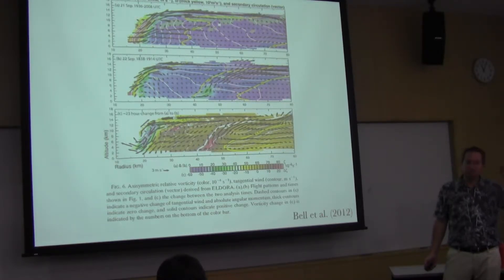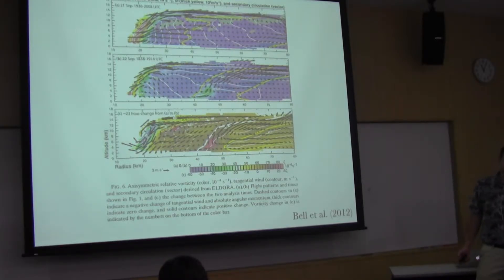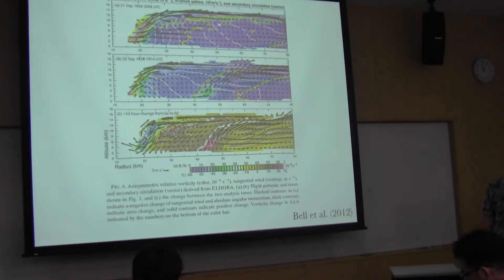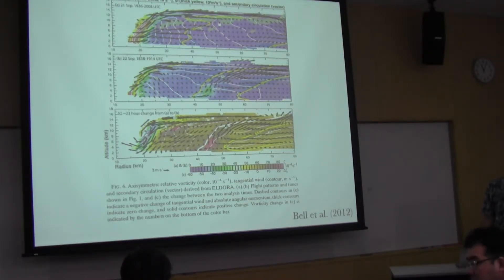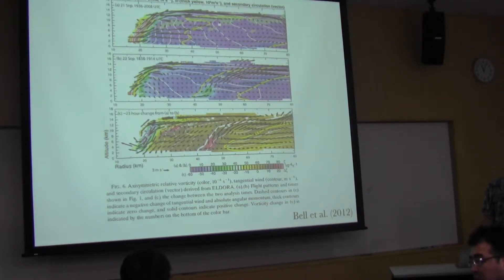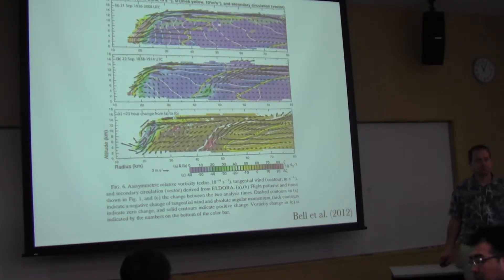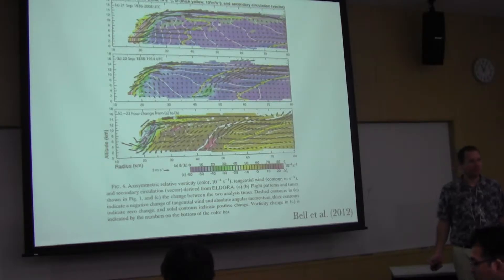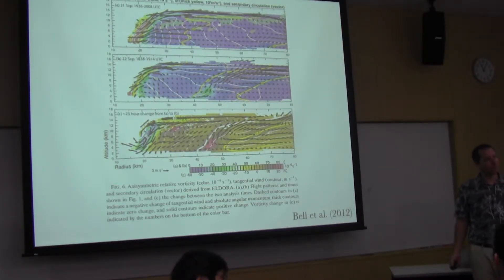Supergradient wind conveys a very high equivalent potential temperature in this level. It gives a very good opportunity to develop convective instability. That makes a second step. If we have much humidity in this area, supergradient wind purifies the large convection, so it forms the secondary eyewall formation. Two-step processes. I think there is another condition - the tangential wind field expands outward before the formation. This is the first step.